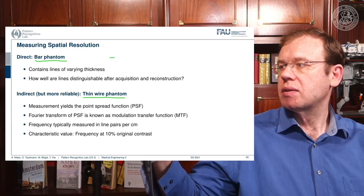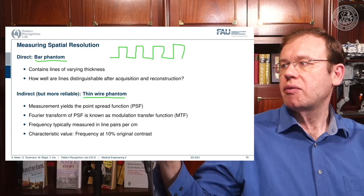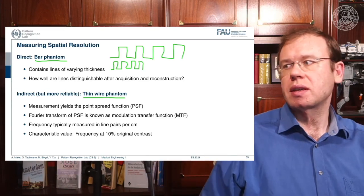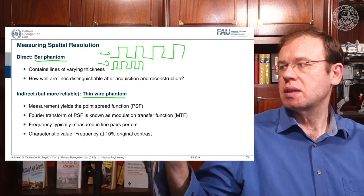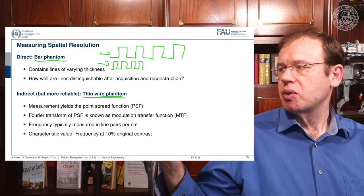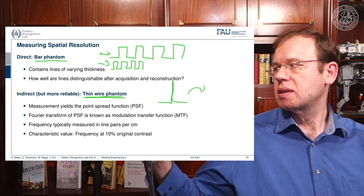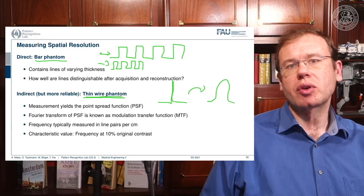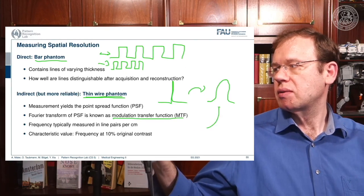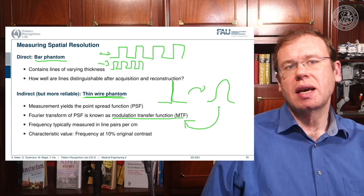The bar phantom is a sequence of black-and-white stripes at different frequencies. When you image bar phantoms of increasing frequency, you can observe at which frequency you can no longer resolve the stripes — that determines the limit frequency of the system. The thin wire phantom works differently: it provides a direct pulse input, and after imaging, you apply the Fourier transform to the blurred output to obtain the modulation transfer function (MTF), which characterizes the system's resolution.